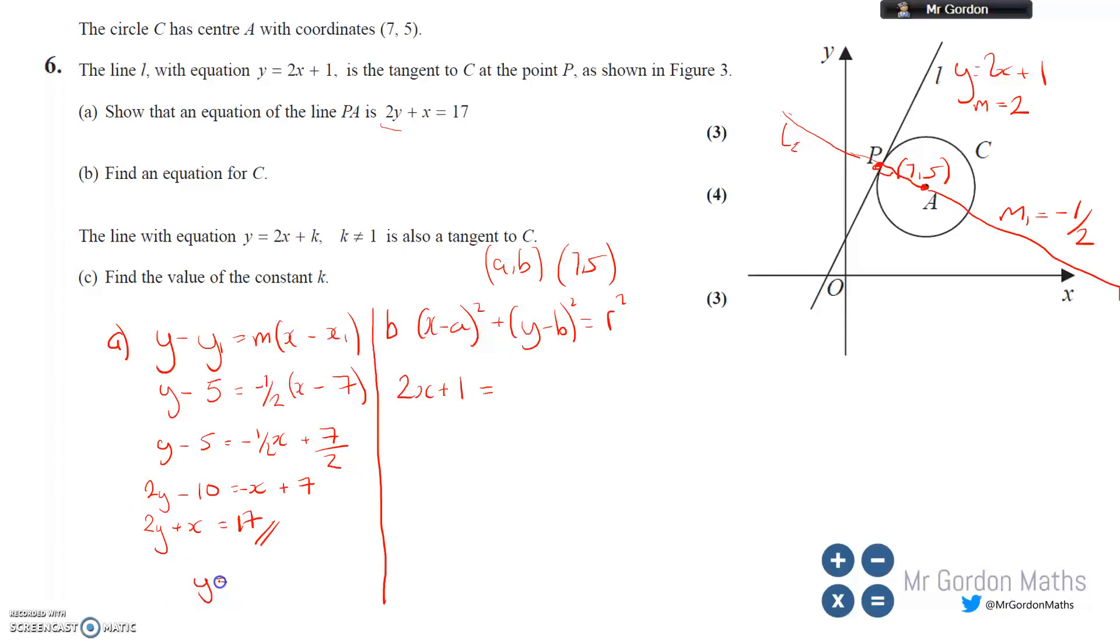The red line L2 has equation 2y+x=17. I need it in y= form: y=(-x+17)/2, or -x/2+17/2. Setting equal: 2x+1=-x/2+17/2. Multiply everything by 2: 4x+2=-x+17. Rearranging: 5x=15, so x equals 3.